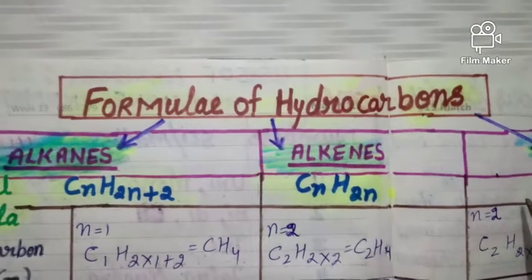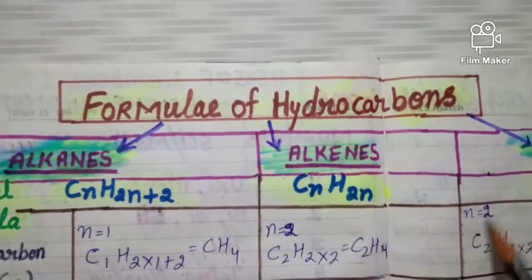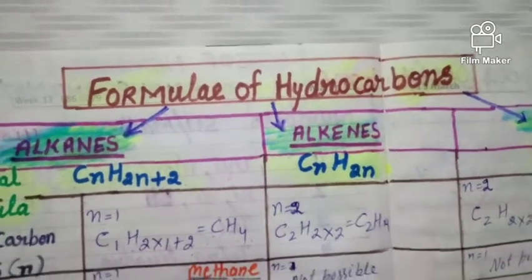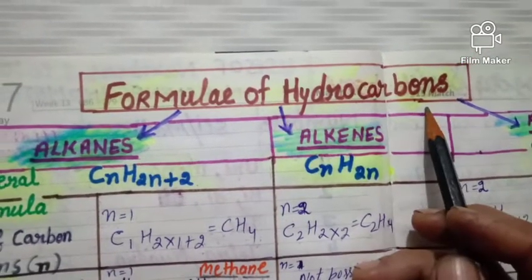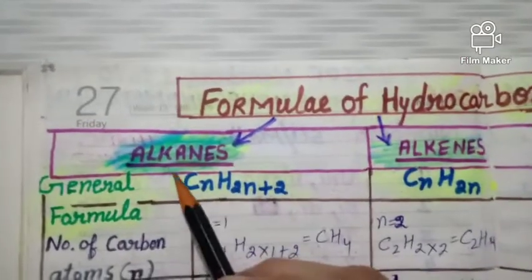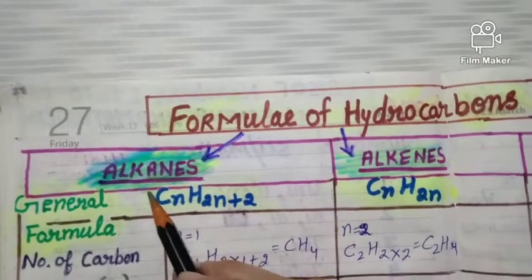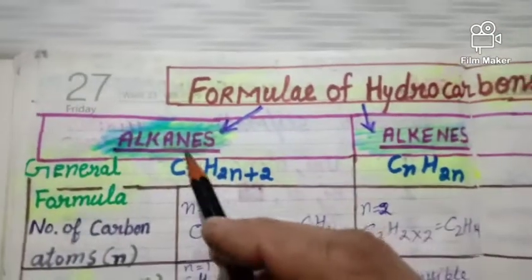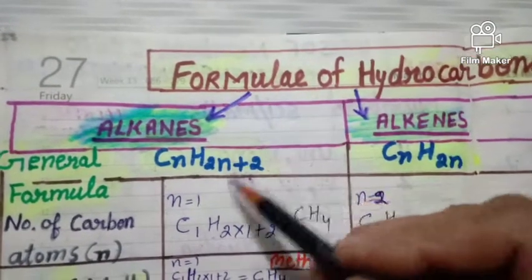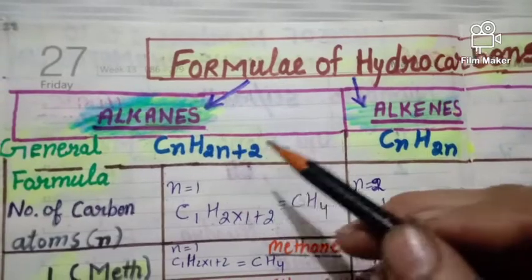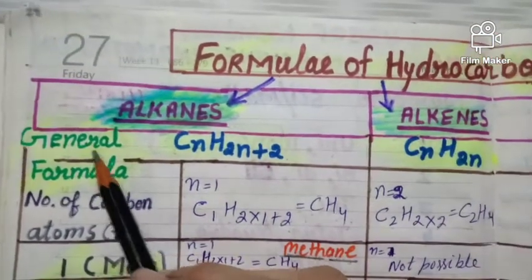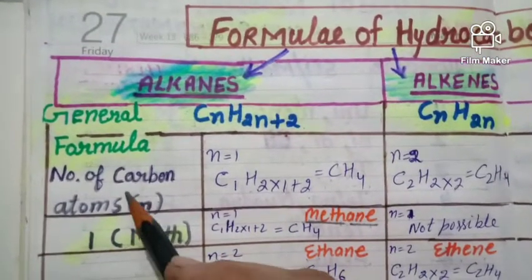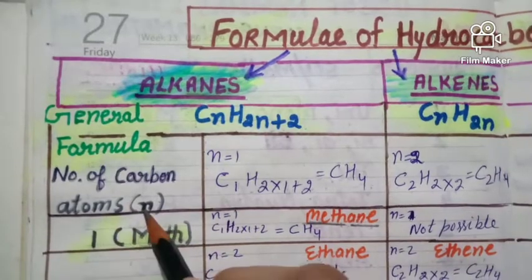Hello friends, welcome to my channel JMB Rudraksh Science Classes. Today's topic is formulas of hydrocarbons from the chapter Carbon and its Compounds. I will explain how the formulas of hydrocarbons are formed. We will take the general formulas of alkanes, alkenes, alkynes, and alkyls, and with the help of these general formulas we can derive the formulas of each hydrocarbon. The names of these hydrocarbons depend on root words based on the number of carbon atoms present.